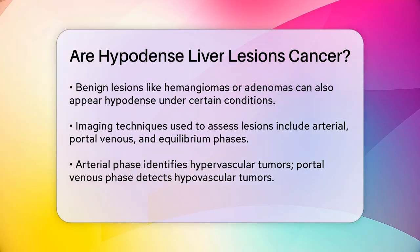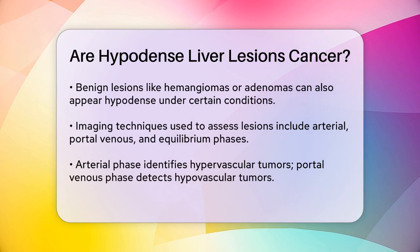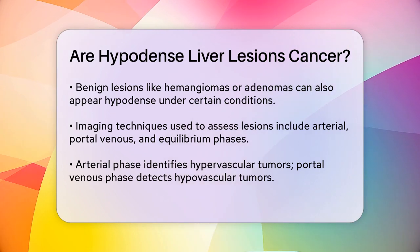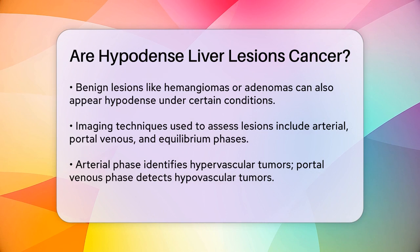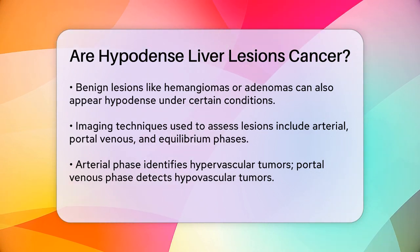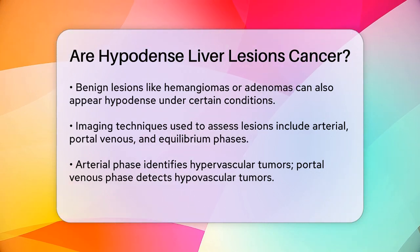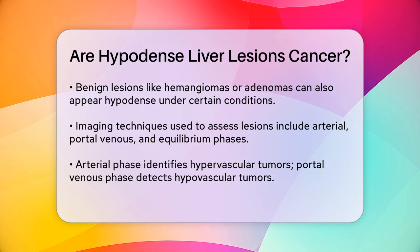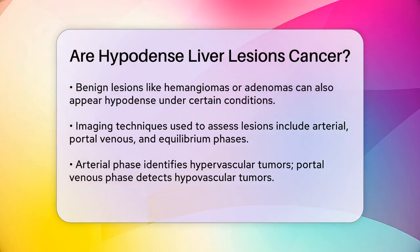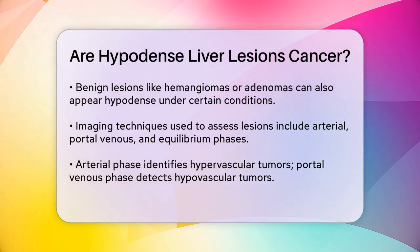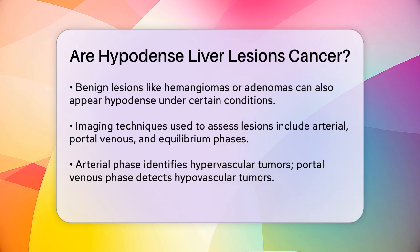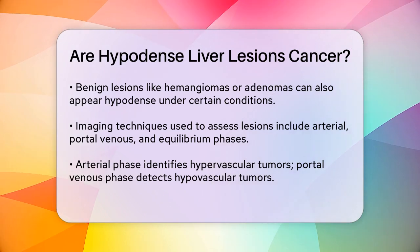Benign lesions: some benign liver lesions, such as hemangiomas or adenomas, can also appear hypodense under certain conditions. For example, a hemangioma might appear hypoechoic on ultrasound if the surrounding liver is hyperechoic due to steatosis. However, these lesions typically have distinct characteristics on imaging that help differentiate them from malignant ones.